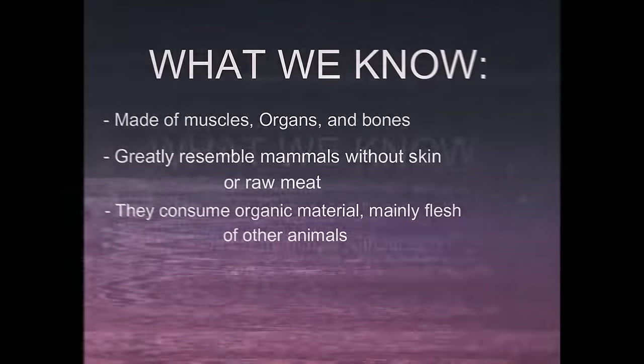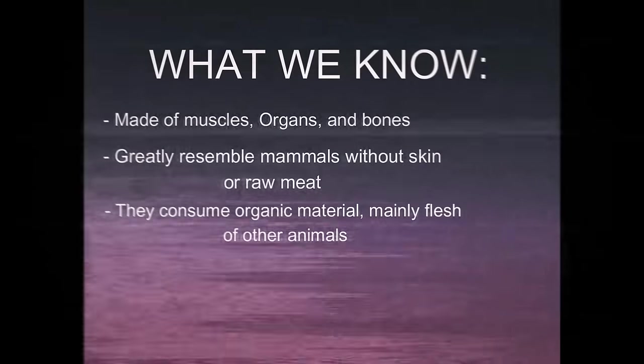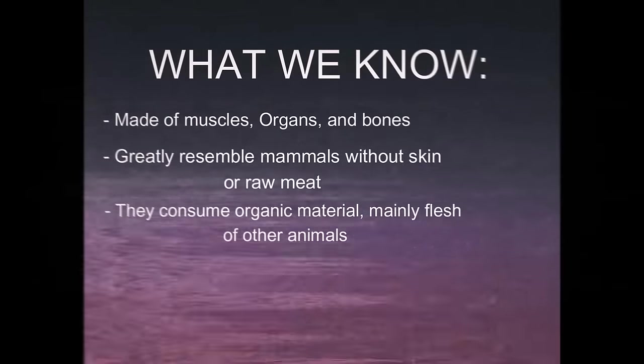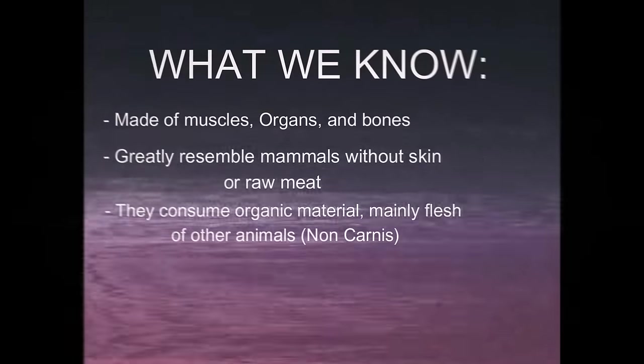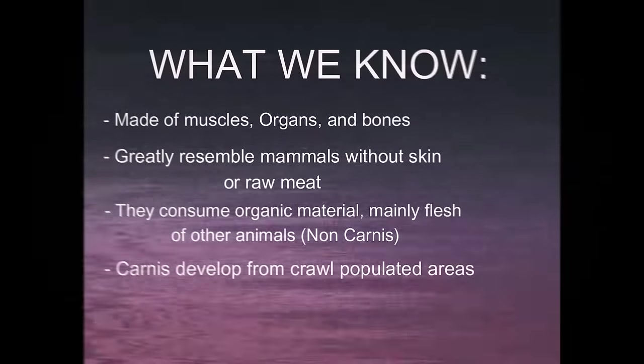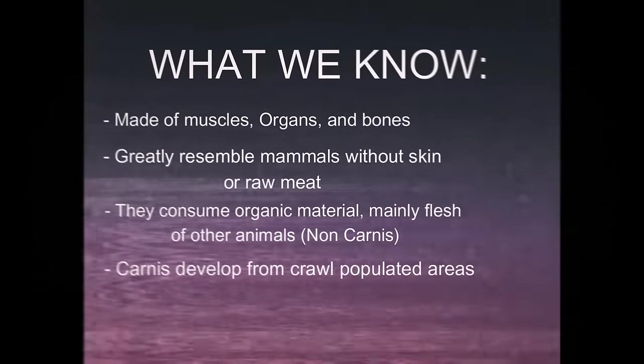The Carnies species consume decaying organic matter, but their main diet is composed of raw meat, not including their Carnies relatives. The Carnies only appear in places where there is an abundance of crawl, which leads to the first creature of the Carnies species.